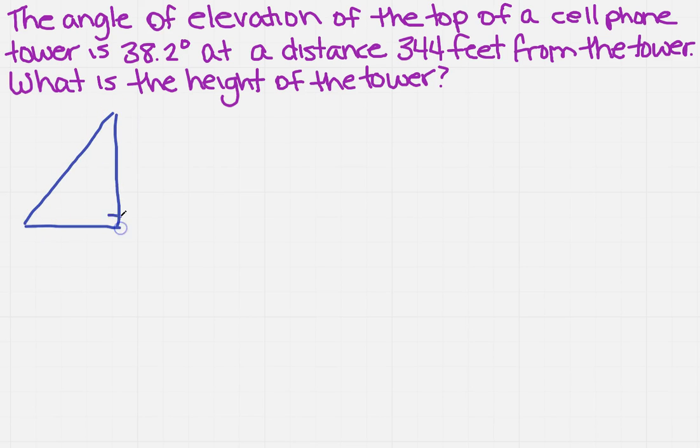Now it says that the angle of elevation at the top of a cell phone tower is 38.2, so that means up here you're going to have 38.2. Now it says that my distance is 344 feet, so that's the next part from the tower. That means that's coming out here is 344. Now if I want to find the height, we know that's going to be a.